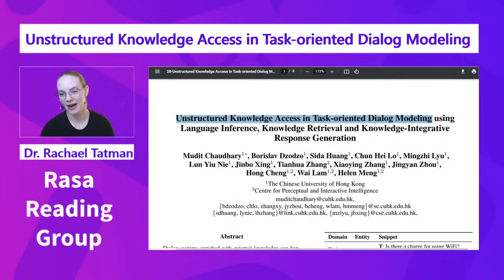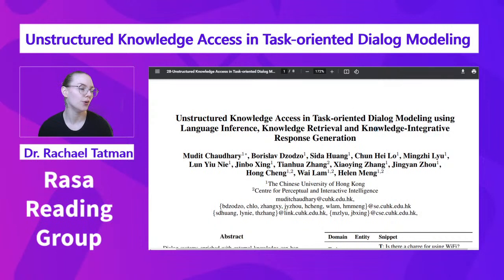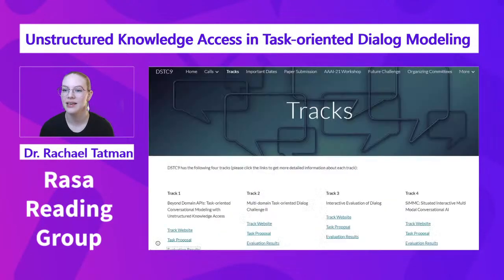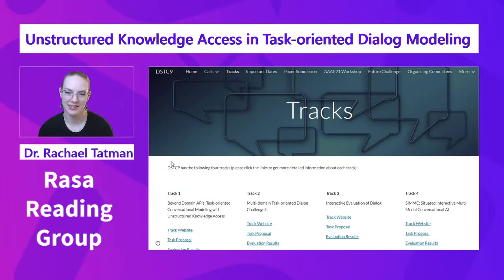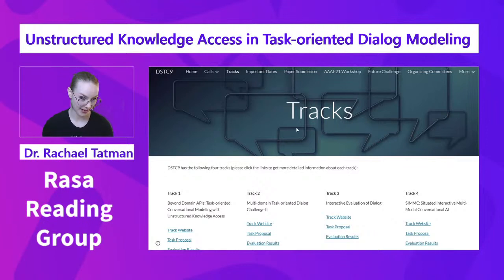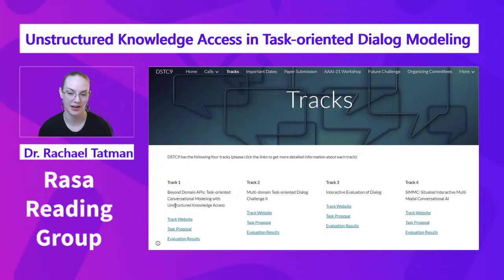This was the paper from that workshop that the most people had talked about on Twitter, so using that extremely rigorous selection criteria, this is the paper we ended up with. It is the first task of the DSTC 9 workshop at AAAI, from 2020. The task is 'Beyond Domain APIs: Task-Oriented Conversational Modeling with Unstructured Knowledge Access.'